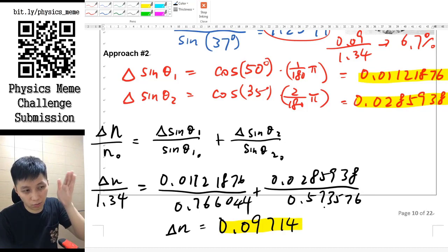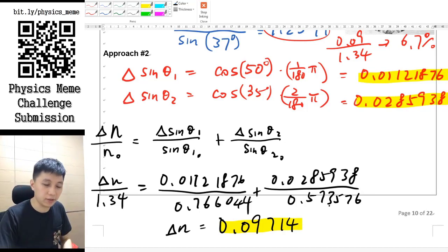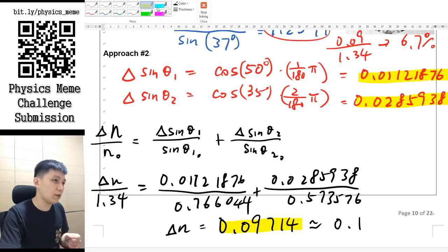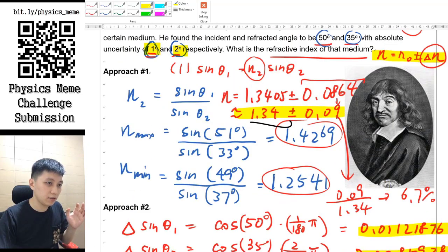It might be slightly different depending on where exactly you cut off the decimal place, so that should round up to 1, so that should be 0.1.